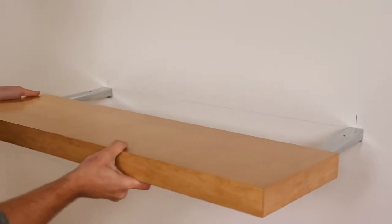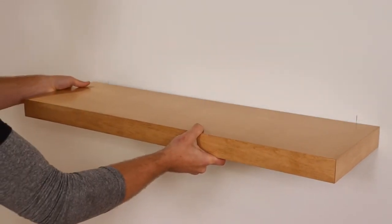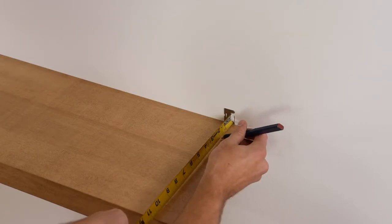Place the shelf onto the brackets and push it firmly against the wall. Measure out two inches from the stud centerline and mark it with a pencil.